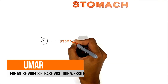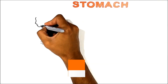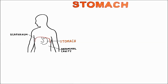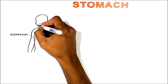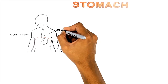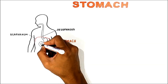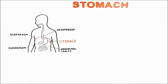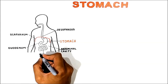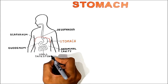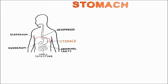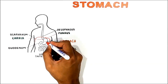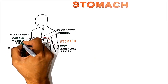The stomach is a J-shaped organ located just inferior to the diaphragm within the abdominal cavity. Here is the esophagus which connects to the stomach. The stomach then connects to the duodenum, which is the first part of the small intestine. The stomach has four main regions: the cardia, fundus, body, and pyloric part.